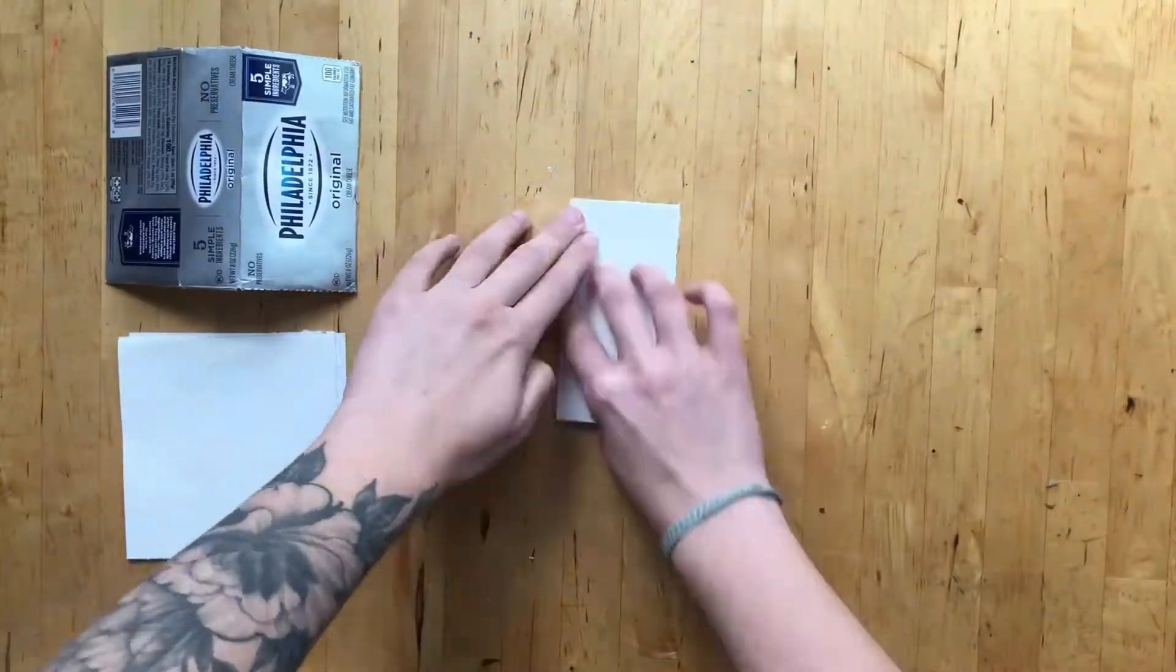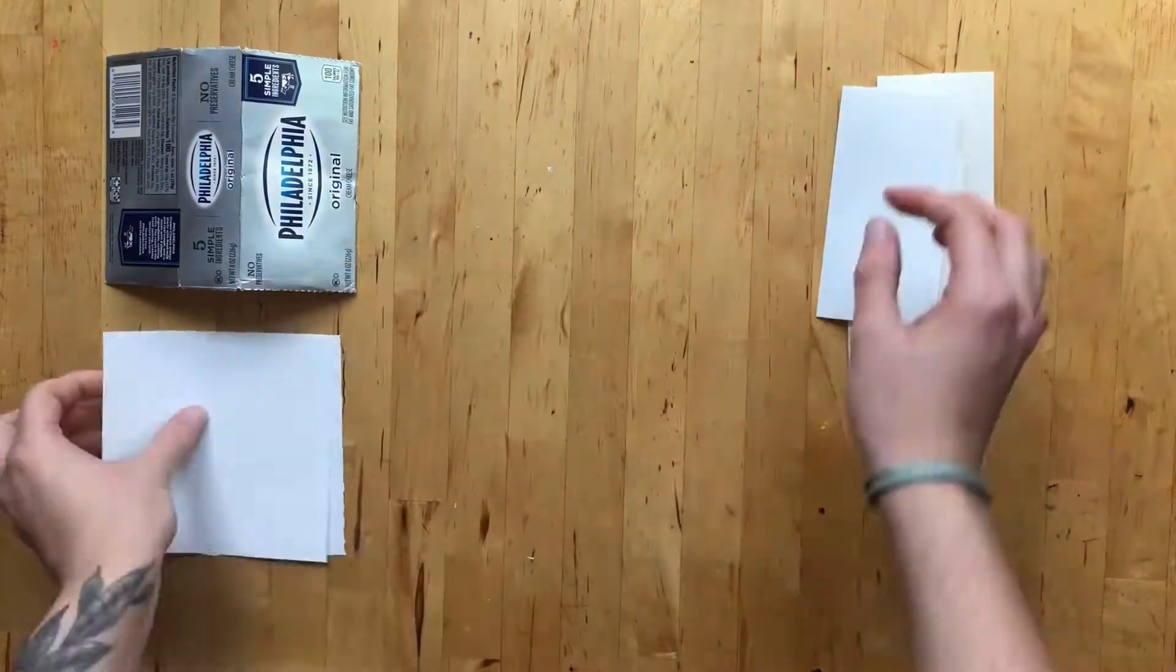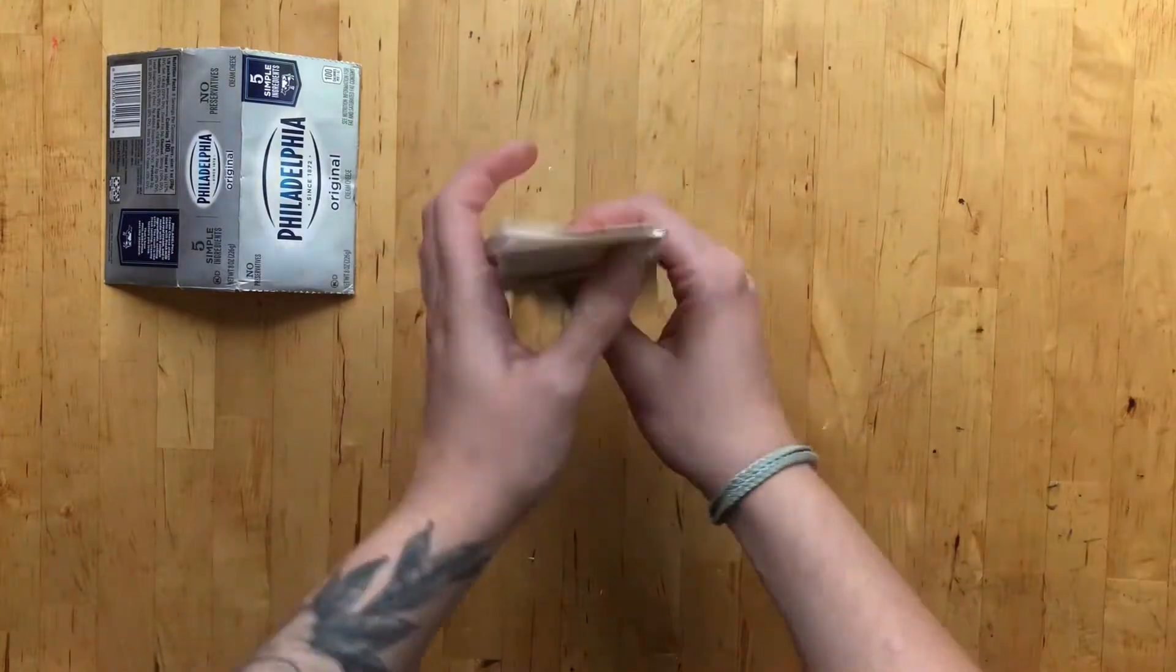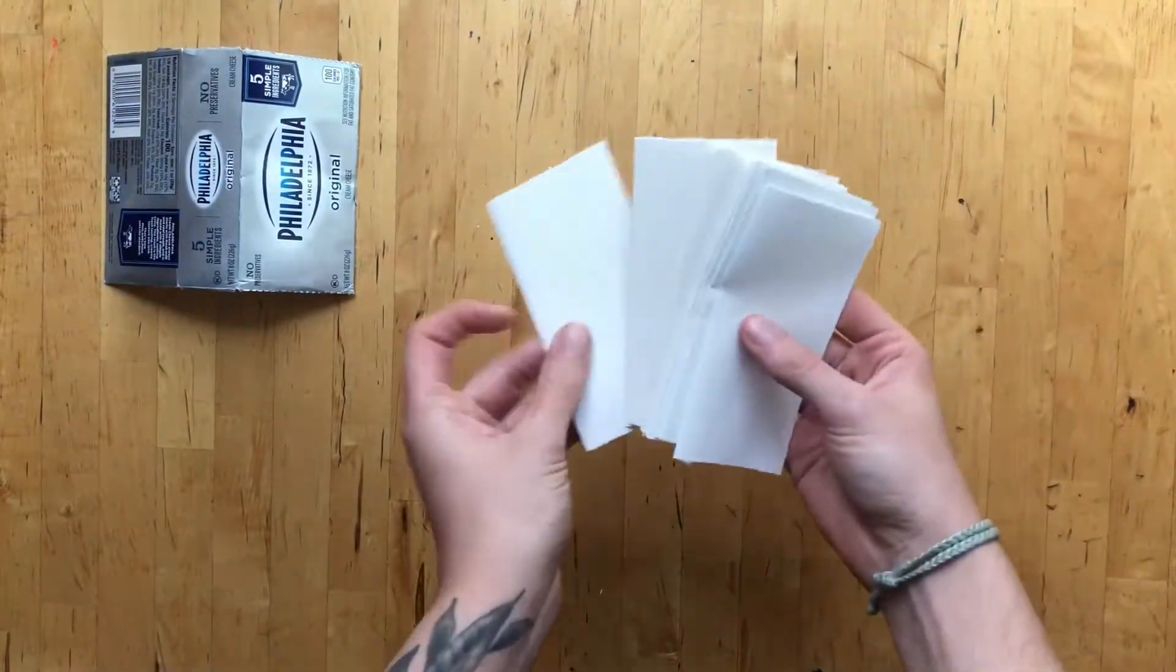When your pages are all cut to the correct size, fold each of them in half. When this is finished, count how many pages you have and split them up equally into different sections of pages, called signatures.